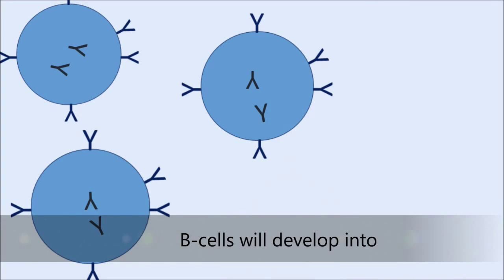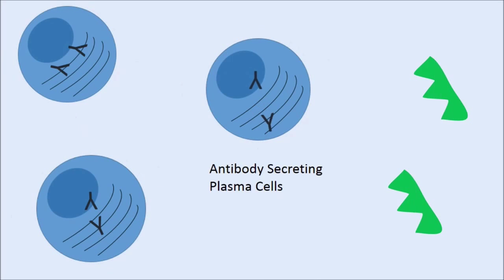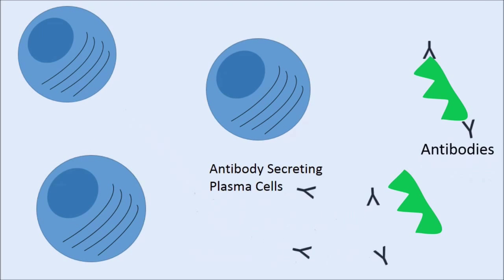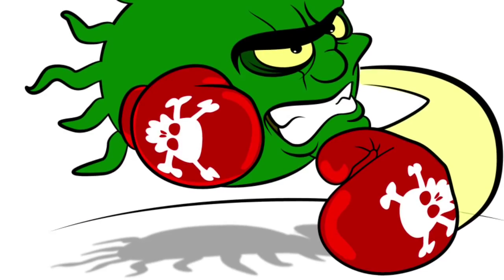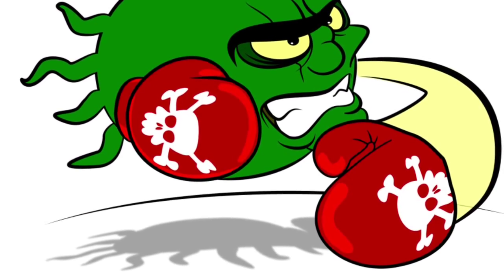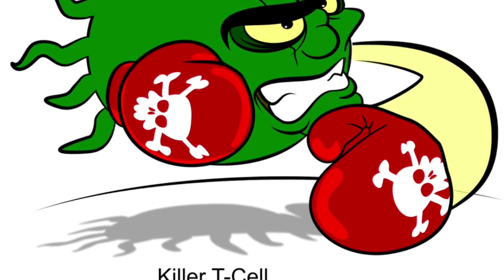The B cells will develop into antibody-secreting plasma cells, which release antibodies whose goals are to attach to the surfaces of the pathogens so they are marked for destruction. Once all the invading bacteria are targeted, other immune cells will kill and destroy them.